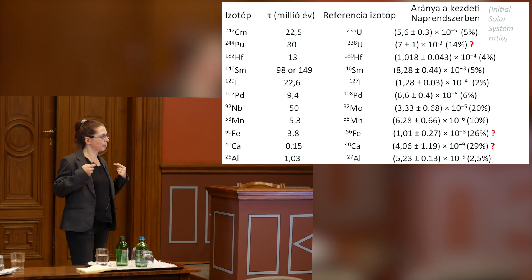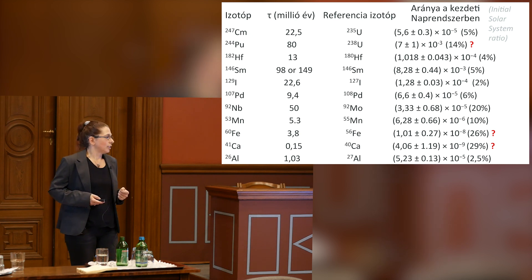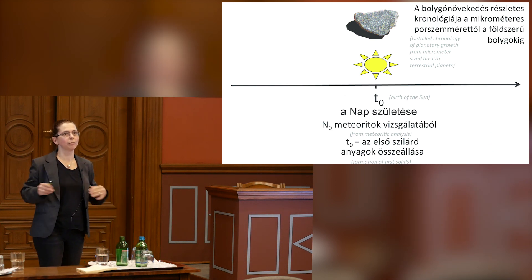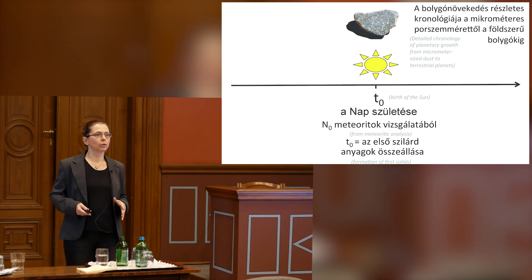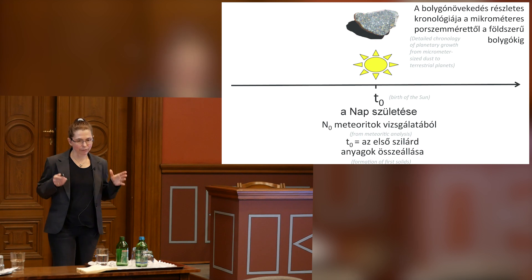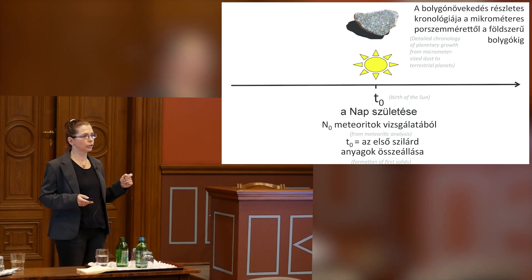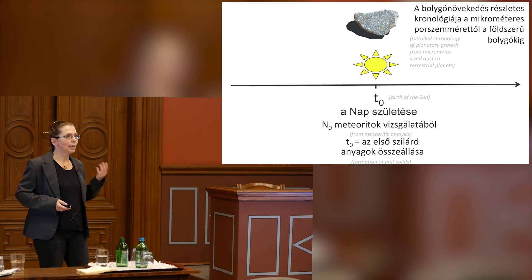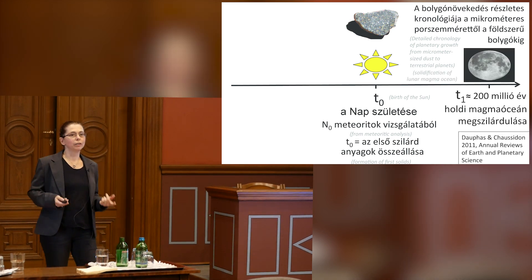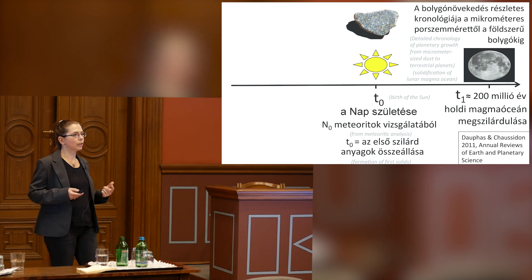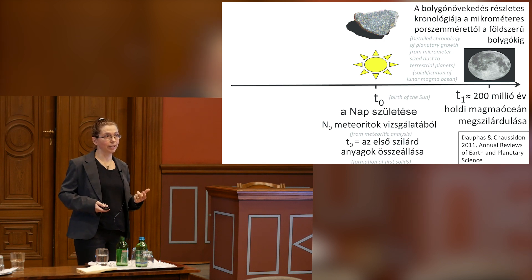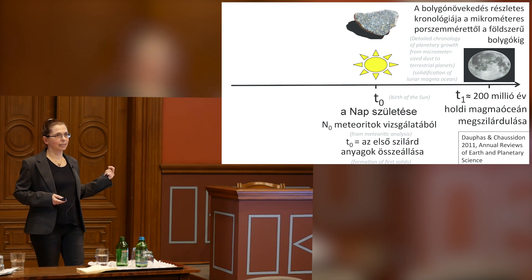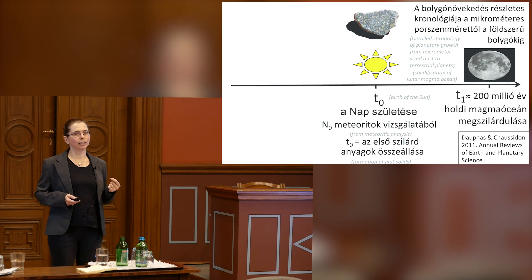So what can we do? We have the Sun and we can go forward in time. This has been done extensively — people have used radioactive nuclei to build a detailed chronology of planet formation in the solar system. One example: the Moon formed 200 million years after the Sun, because of the analysis of these radioactive nuclei. I don't have time to discuss this further, but you can look at that paper if you want to learn more.